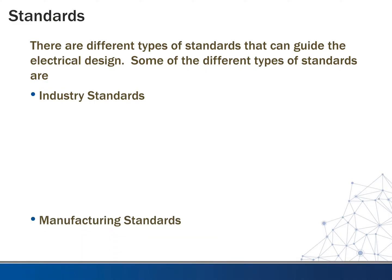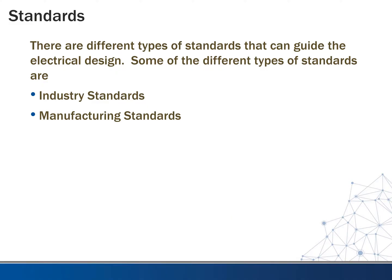In addition to industry standards, we can also have manufacturing standards. These provide more of a basis of design as far as a minimum level of quality. You can have NEMA standards — the National Electrical Manufacturers Association standards — which is an organization that maintains standards for electrical construction. You can also have ISO standards, which usually have to do with a facility ensuring a certain level of quality of the work done.